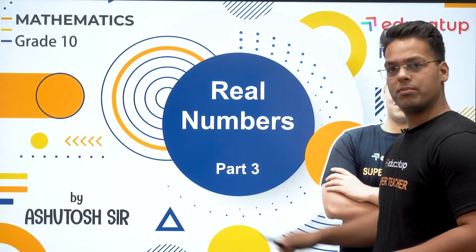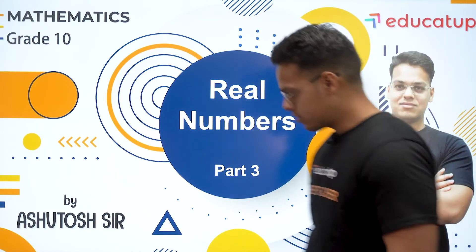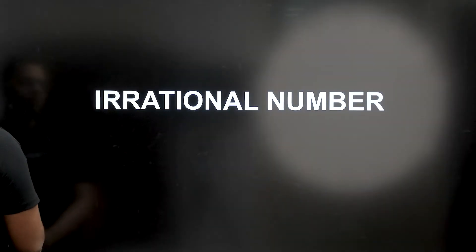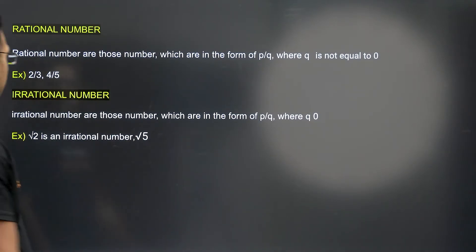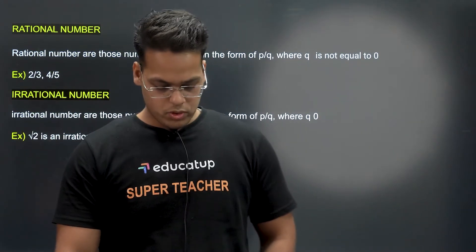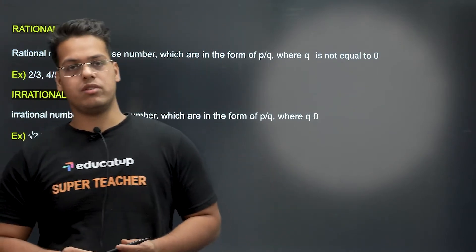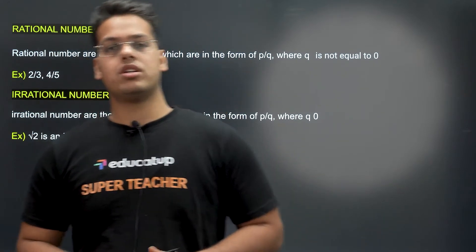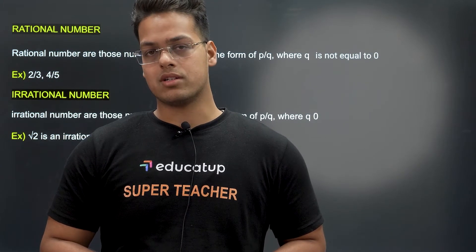The topic for today is Real Numbers Part 3. So let's start with the questions on rational numbers and irrational numbers. As we all know, rational numbers are those numbers which are in the form of P upon Q, but there is a condition: Q is always not equal to zero.